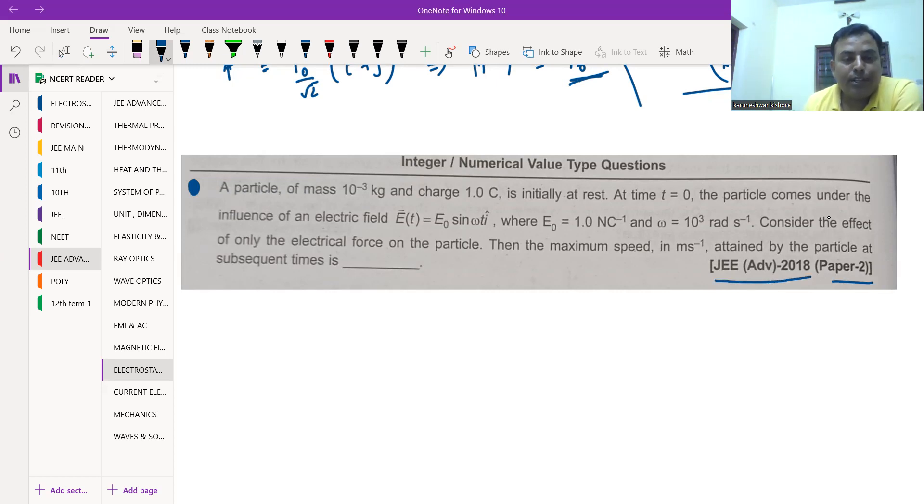Let's have a look at the question statement. A particle of mass 10⁻³ kg and charge 1 coulomb is initially at rest at t = 0. The particle comes under the influence of an electric field E(t) = E₀ sin(ωt) î, where E₀ = 1 N/C and ω = 10³ rad/s. Consider the effect of only the electrical force on the particle. Then the maximum speed in meters per second attained by the particle at subsequent times.